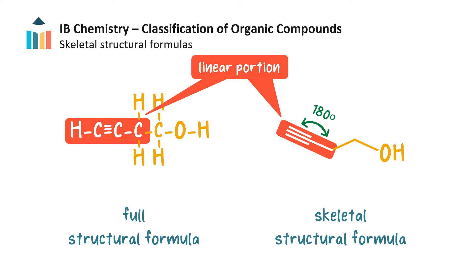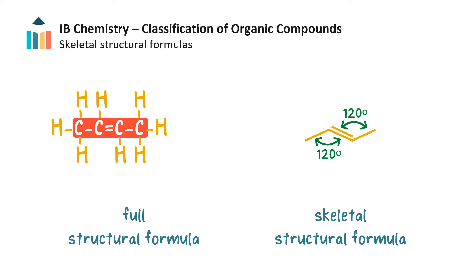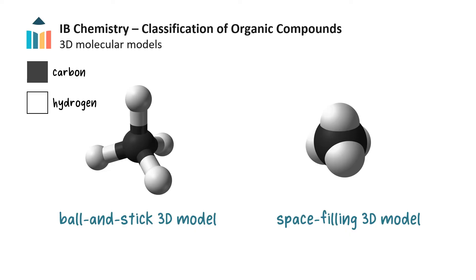Skeletal formulas show the shape and bond angles of the molecule more accurately. For example, the portion of a molecule with a carbon-carbon triple bond is linear. But if a carbon atom forms one double bond and two single bonds, the angle between the bonds is approximately 120 degrees. The skeletal formula should be drawn such that this angle is correct. Molecules may be shown as 3D models, either ball-and-stick models as we saw previously, or space-filling models. These have the same pattern of bonds as the structural formula, but the bond angles and lengths are more accurately represented.